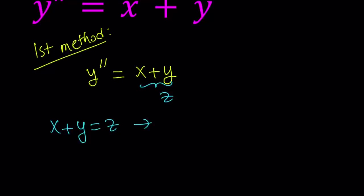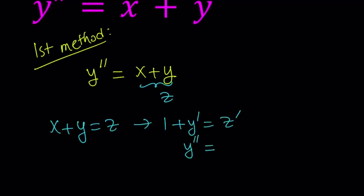If I differentiate both sides — remember we are differentiating everything with respect to x because y is a function of x — z is also a function of x. The derivative of x with respect to x is just 1, so it's going to be 1 plus y prime equals z prime. Since I have the second derivative on the left hand side, I'm going to differentiate one more time. The derivative of 1 is 0, and the derivative of the first derivative is the second derivative, so this gives us y double prime equals z double prime.